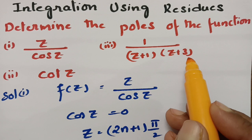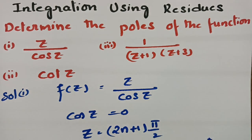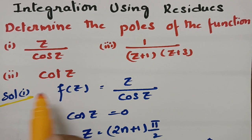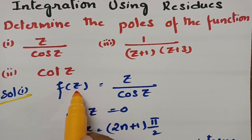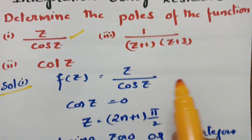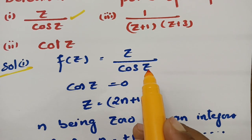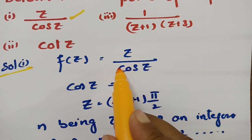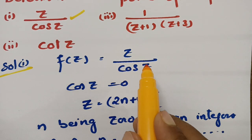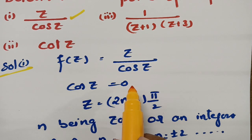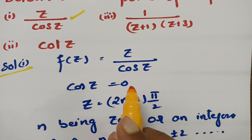First of all, in order to find the singularities of a function, what we have to do? In solution 1, the function f(z) is given as z by cos z. In order to find the singularities, we have to equate the denominator to 0. So, cos z is equal to 0.